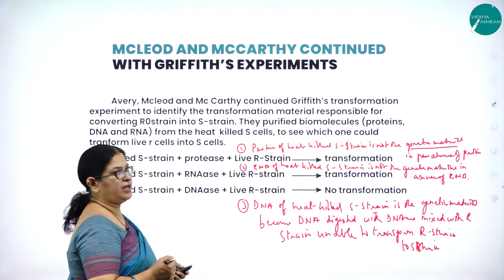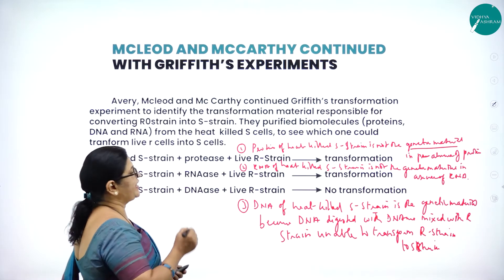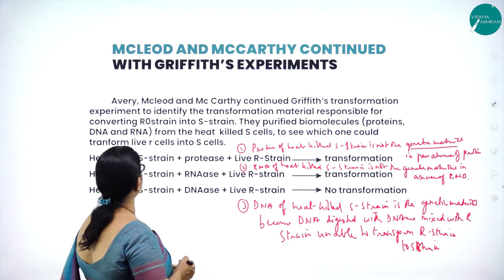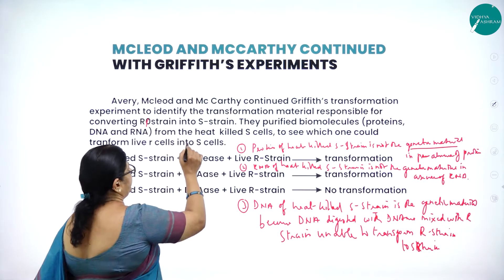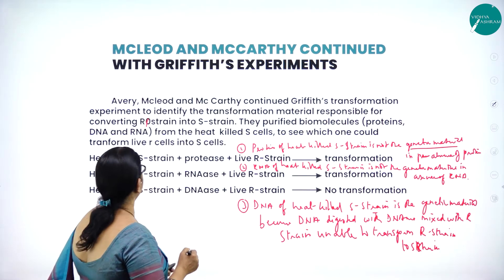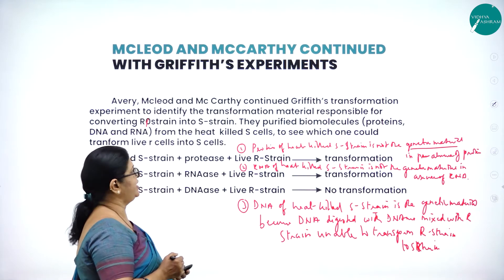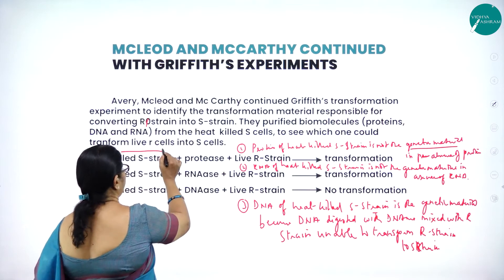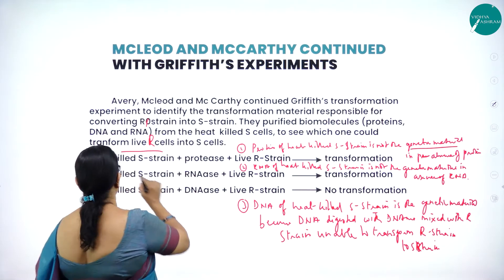Avery, MacLeod and McCarty continued the Griffith experiment to identify the transformation material responsible for converting R-strain into S-strain. They purified biomolecules — that is, protein, DNA, and RNA — from the heat-killed S-cells to see which could transform live R-cells into S-cells.